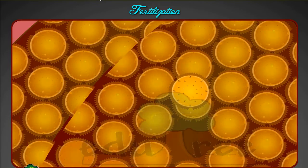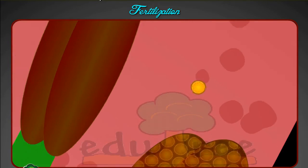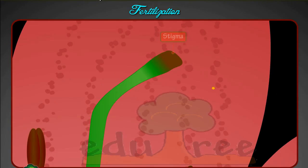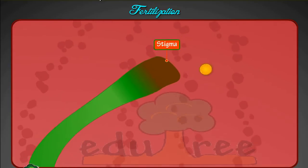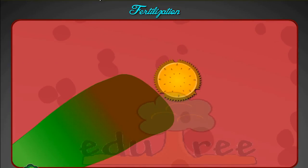To reach the embryo sac, the pollen grain must land on the stigma. Once landed, it begins to germinate. A tube cell forms a long structure down the style and into the ovary.